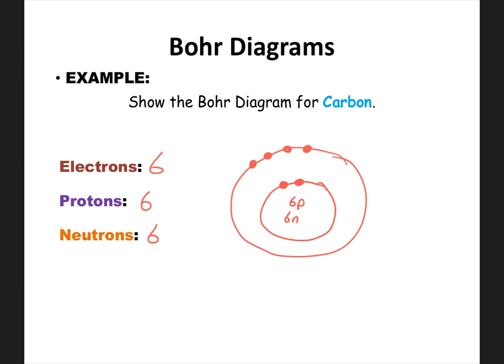This would be the Bohr diagram for carbon. I recommend labeling how many electrons you're drawing in each ring nearby. For example, write '2' next to the first ring and '4' next to the second. That way, if I'm grading your paper, there's no confusion about whether a stray dot was intentional. If you label it, I can quickly check and confirm you meant two in the first and four in the second. That would be a good complete Bohr diagram.